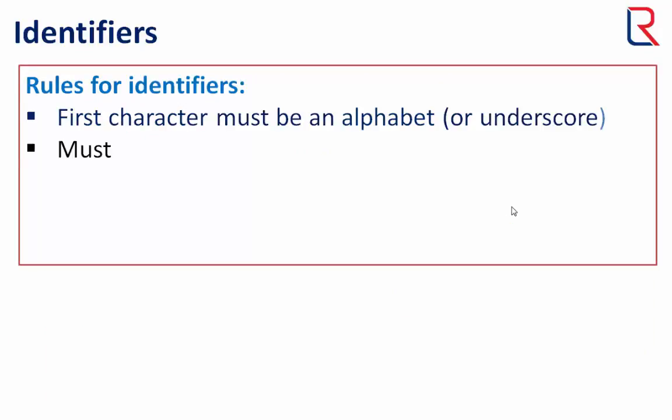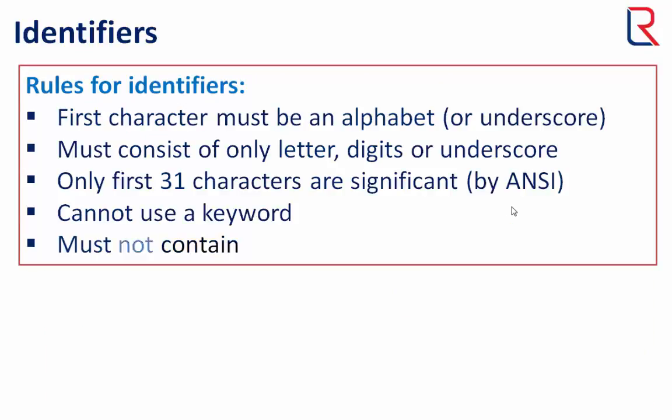Now let's move on to rules for identifiers. The first character must be an alphabet — we cannot take any digit at first place in an identifier name. Although some compilers allow an underscore as the first character in an identifier name. The identifier must consist of only letters, digits or underscores.